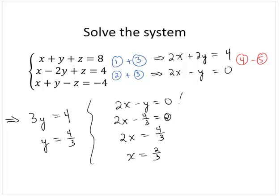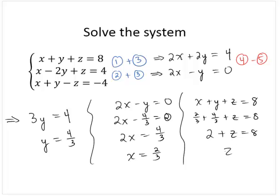And now that I have values of x and y, I can solve for z. Using the fact that x plus y plus z is 8, I have 2 thirds plus 4 thirds plus z is 8. 2 thirds plus 4 thirds is 6 thirds, which is 2. So 2 plus z is 8, which implies that z is 6.